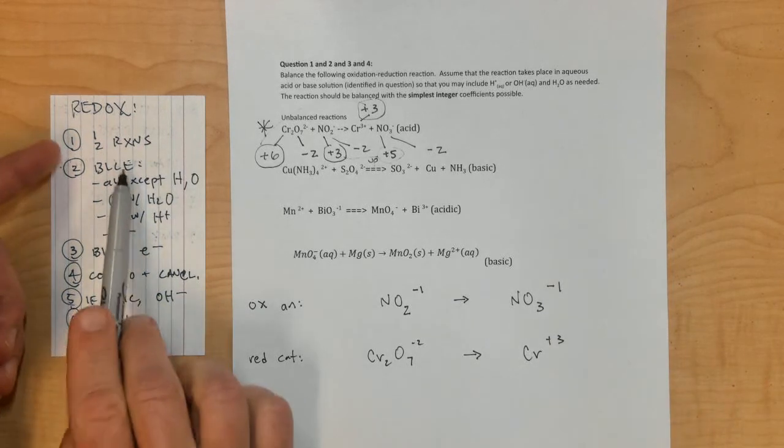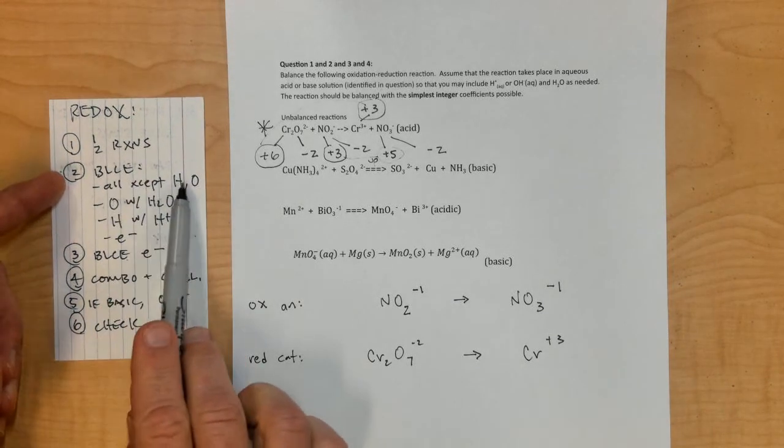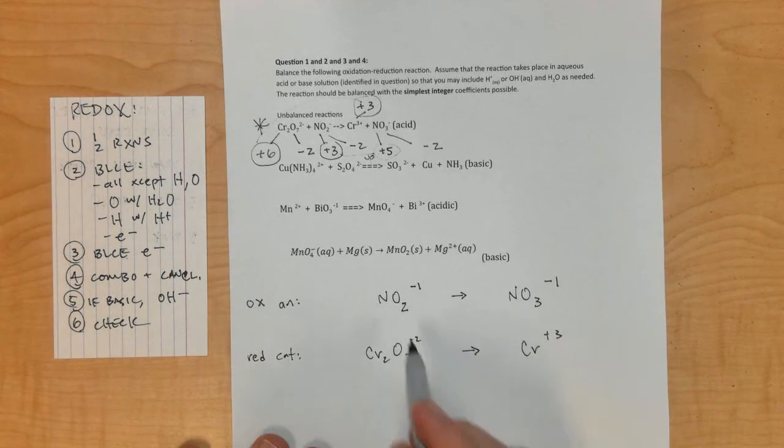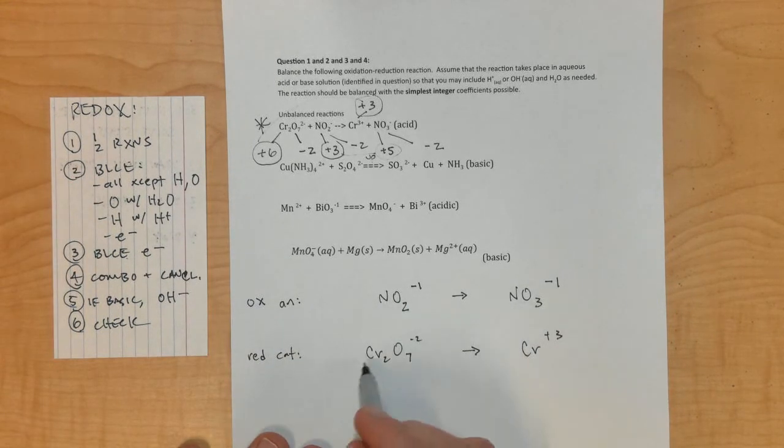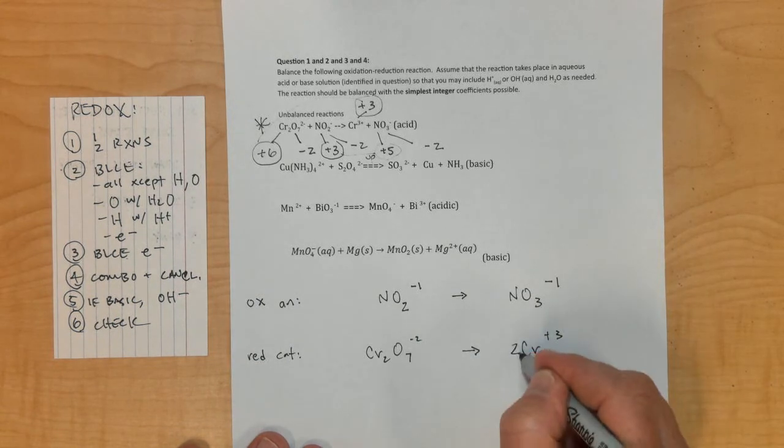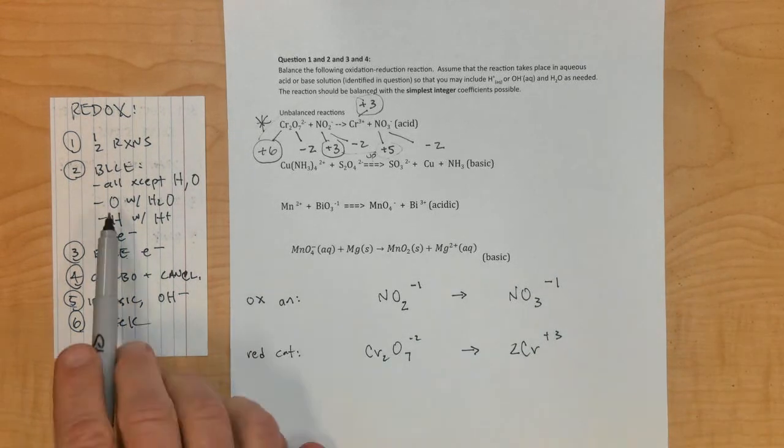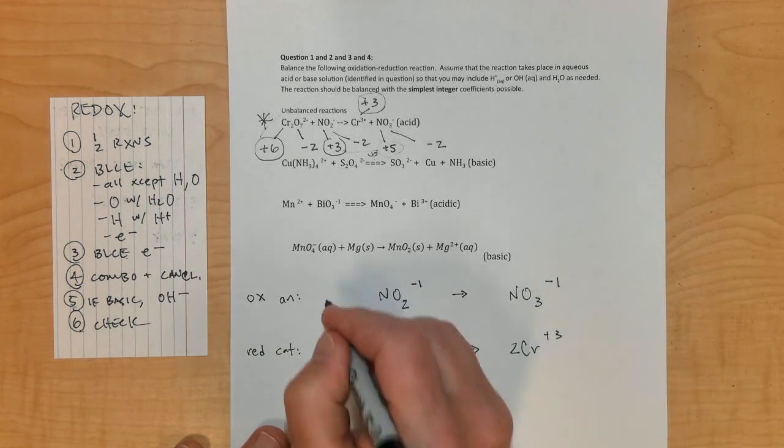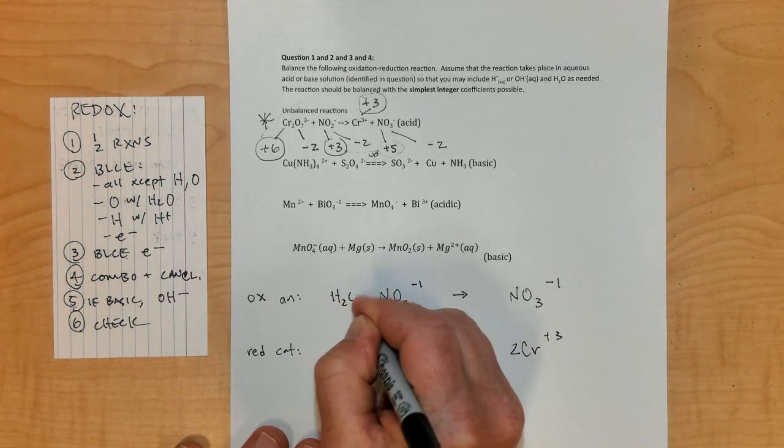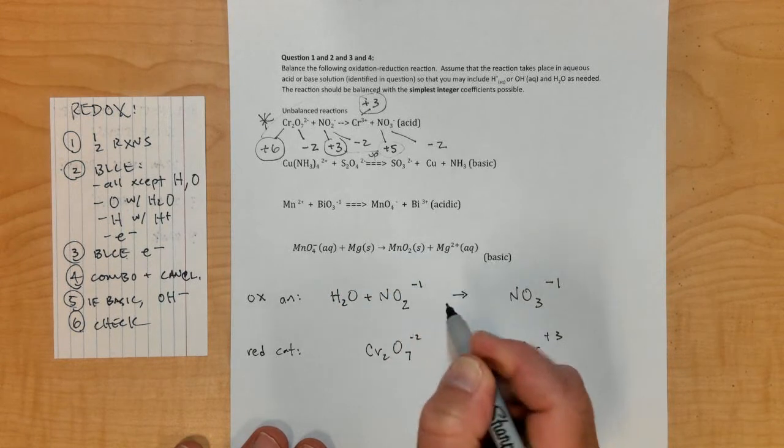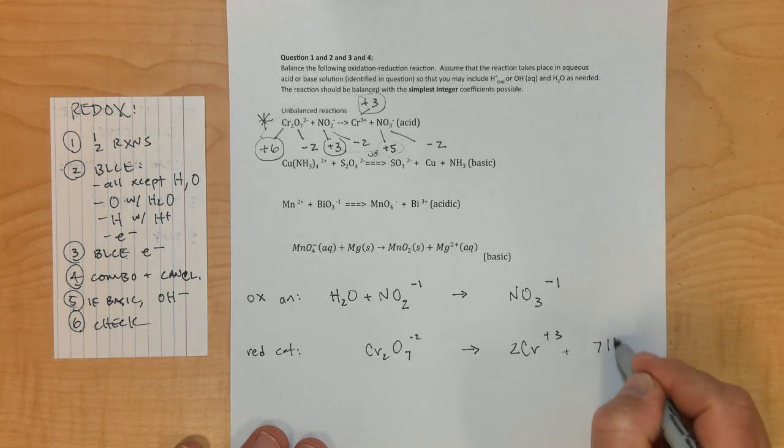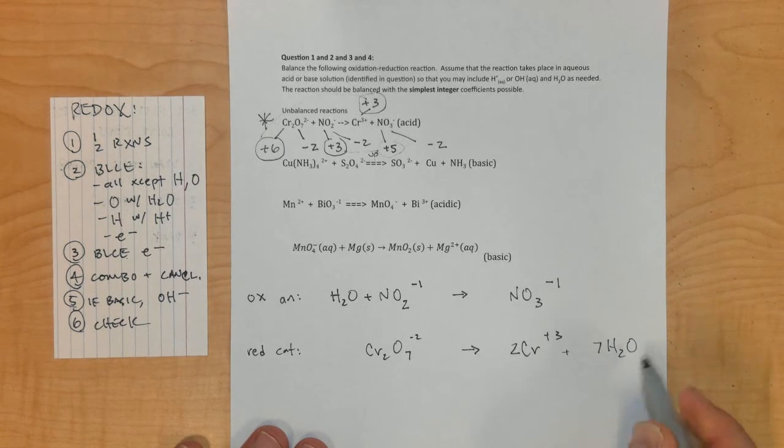Following the steps, after I have the half reactions, I need to balance everything except hydrogen and oxygen. The nitrogens are balanced, but I have to balance the chromiums by putting a 2 here. Then balance the oxygens using H2O. There's 3 oxygens here, 2 here, so I need 1 H2O on this side. Over here, I have 7 oxygens, so I need 7 H2Os on this side.